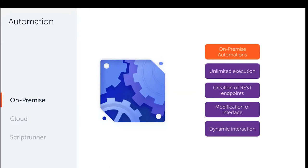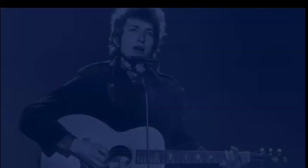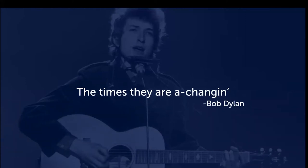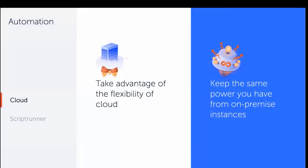As Bob Dylan famously said, the times they are changing. We're now moving into the cloud era, and that changed the mentality for any app vendor creating automation. The question was simple: how do you take advantage of the flexibility and scalability of the cloud while keeping the same power that customers are accustomed to on server or data center? The main difference is how apps are built for the two environments.